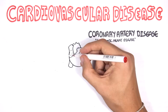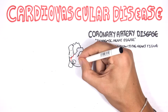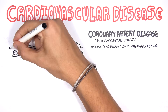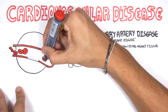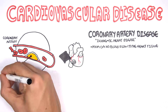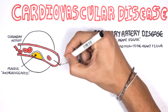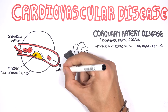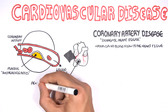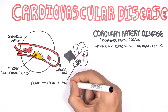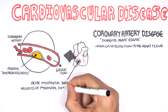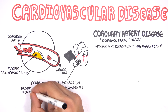Coronary artery disease is where we have poor blood flow to the heart. The heart is supplied by vessels called the coronary arteries. If we have a plaque as a result of atherosclerosis, for example, we have decreased blood flow to the heart tissues. If we get no blood flow, it can lead to acute myocardial infarction, where we have necrosis of the myocardial tissue caused by lack of oxygenation and blood flow.